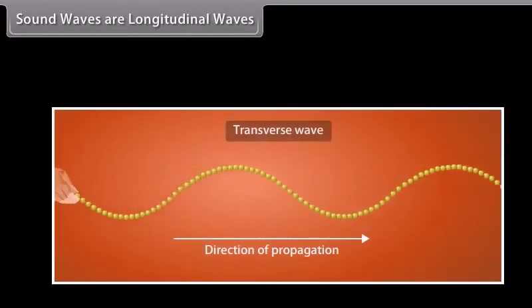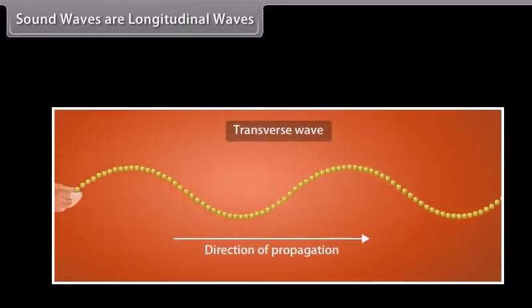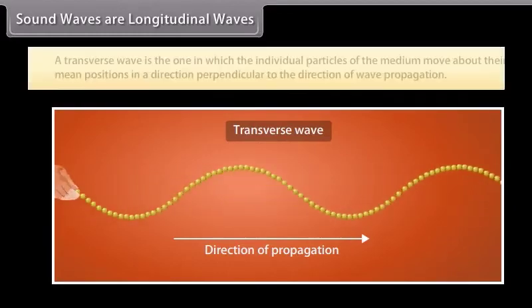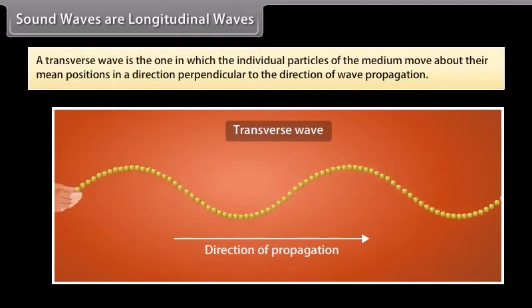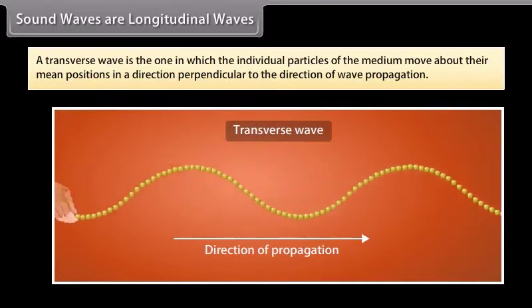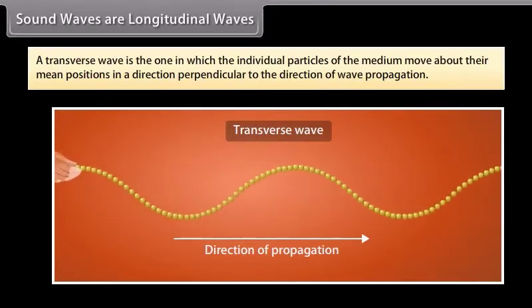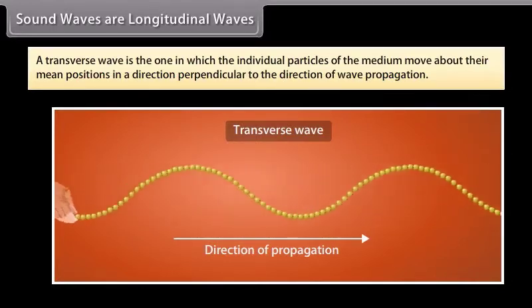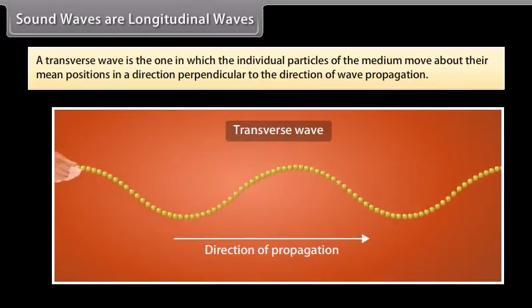There is also another type of wave called a transverse wave. A transverse wave is the one in which the individual particles of the medium move about their mean positions in a direction perpendicular to the direction of wave propagation.